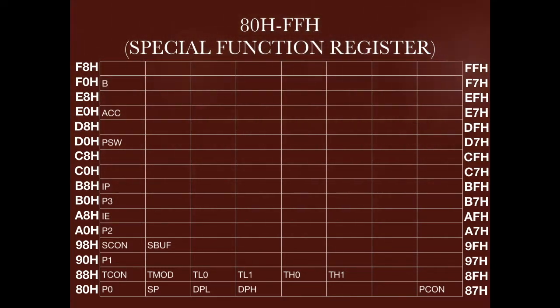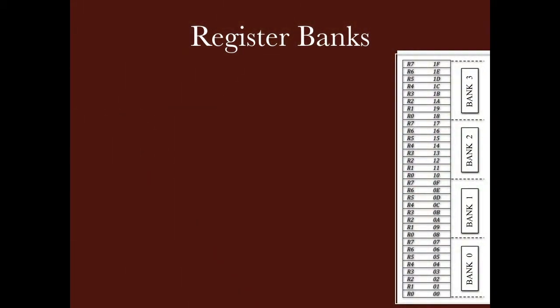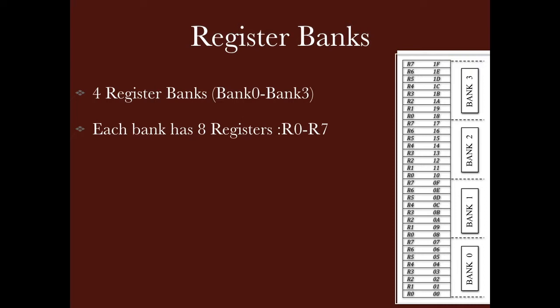Now we will discuss all these registers in detail, starting with register banks. In 8051, a total of 32 bytes of RAM are allocated for register banks. These 32 bytes are divided into 4 groups, or 4 banks, and each bank has 8 registers, R0 through R7. The first bank is Bank 0, which starts from location 00H and goes to 07H, with R0 at location 00H.